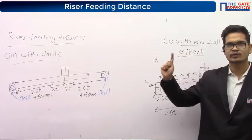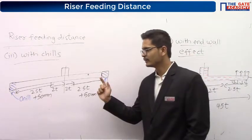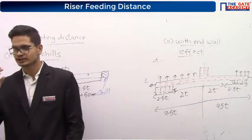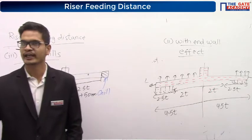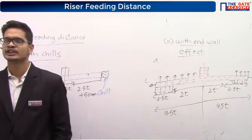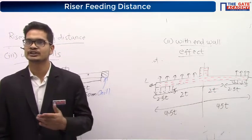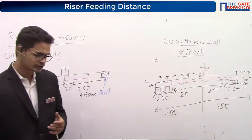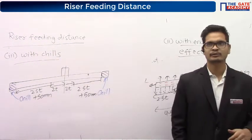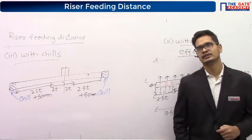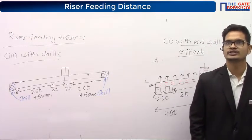This topic has been asked only once for the PI branch, not for the mechanical branch. Any high thermal conductivity material can be used as a chill. Now coming back to casting defects.